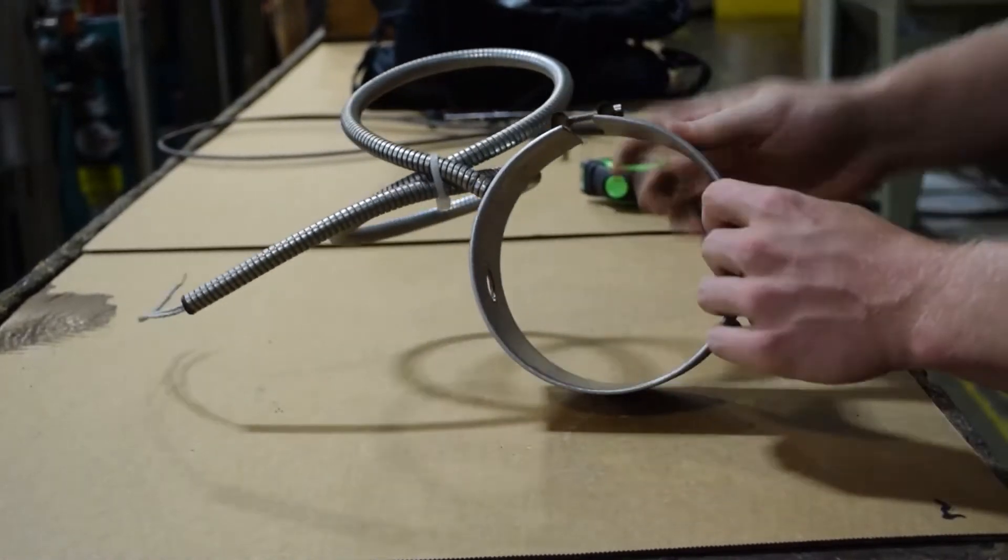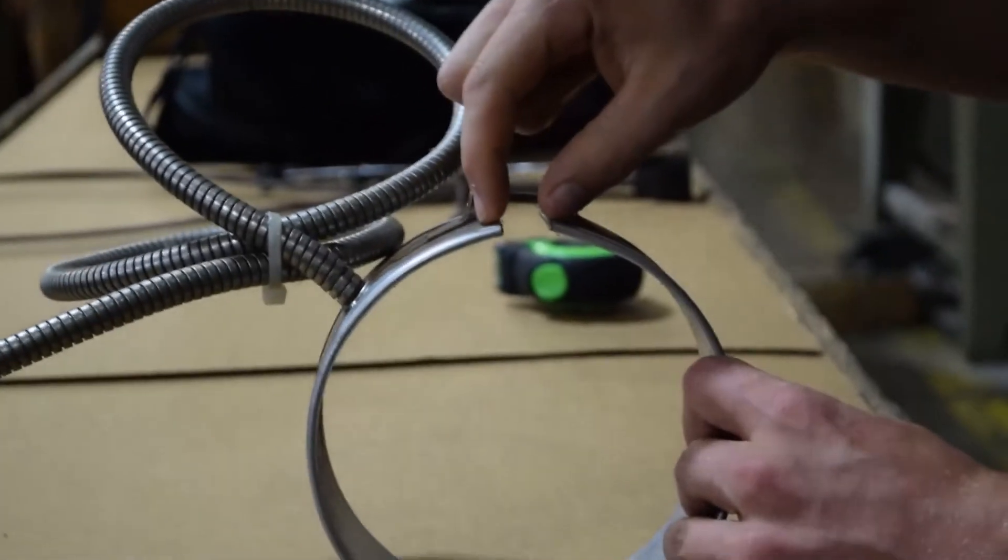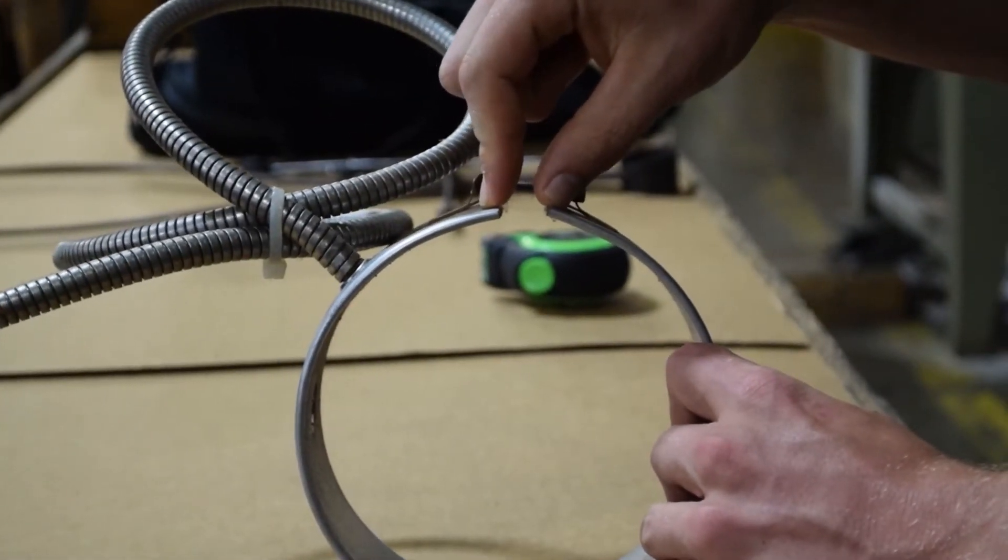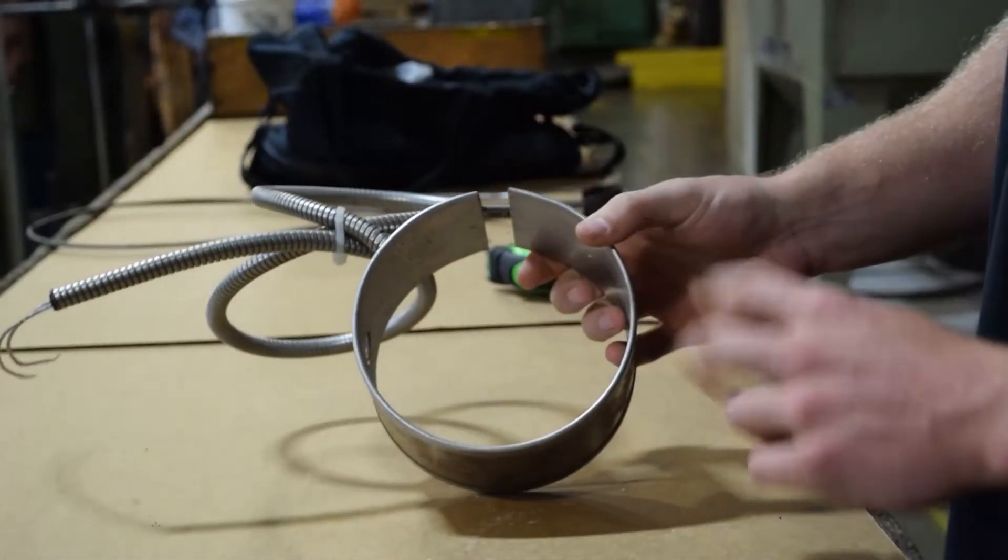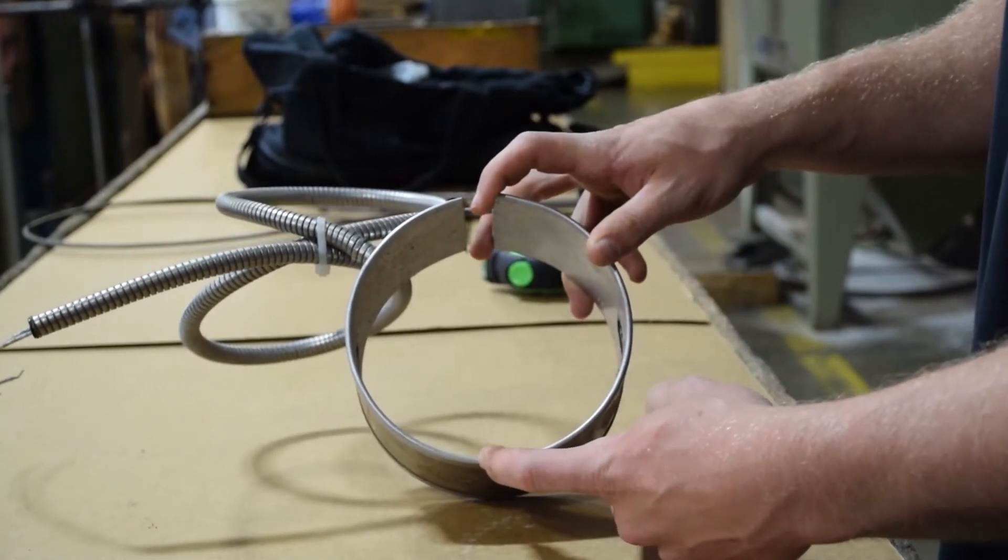Next, we will look at the gap. A one-piece band heater will have a gap that is 5 sixteenths of an inch standard. A two-piece band heater will have two gaps, each will be 3 sixteenths of an inch standard.